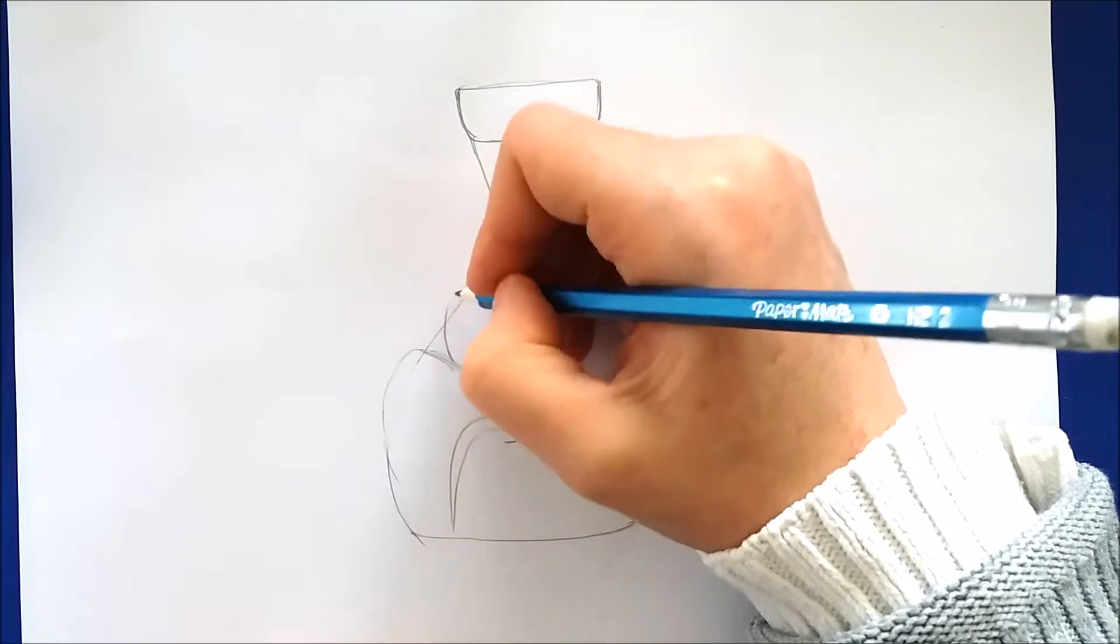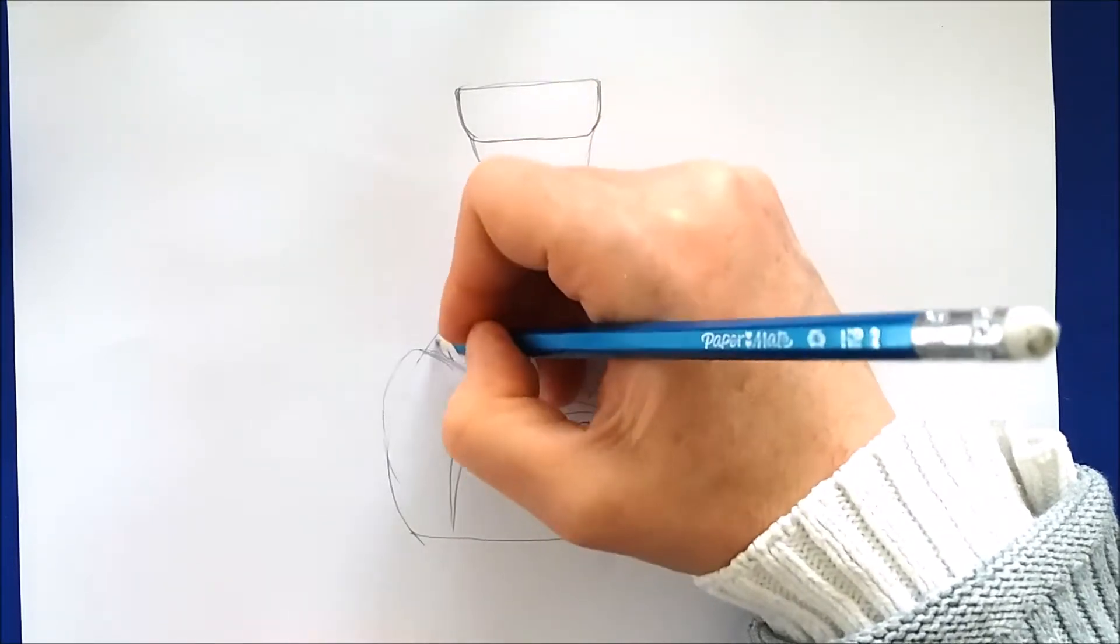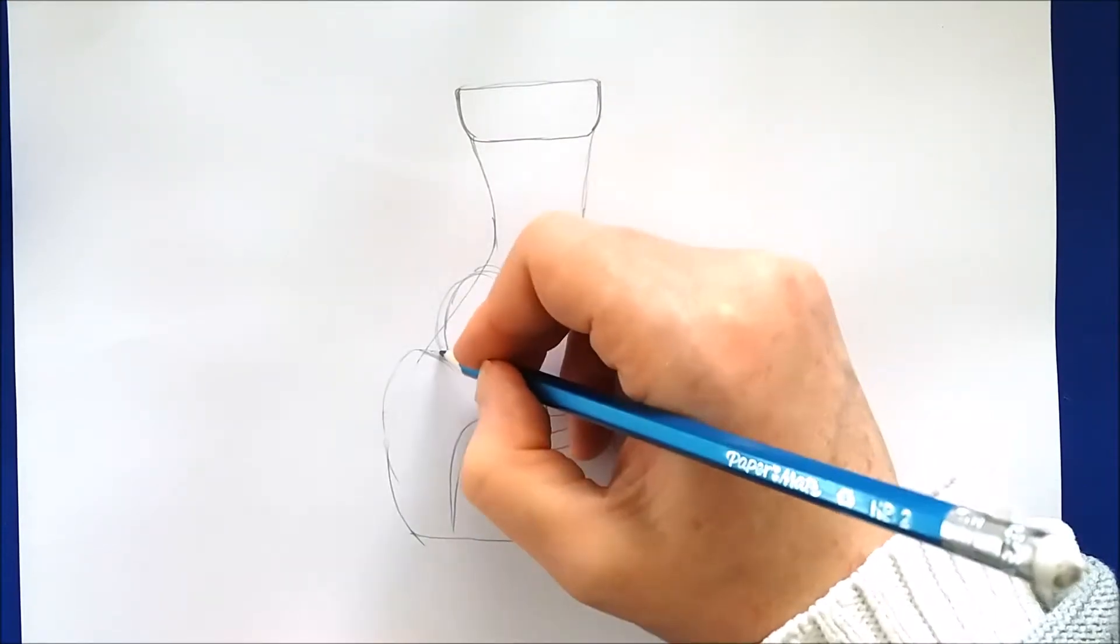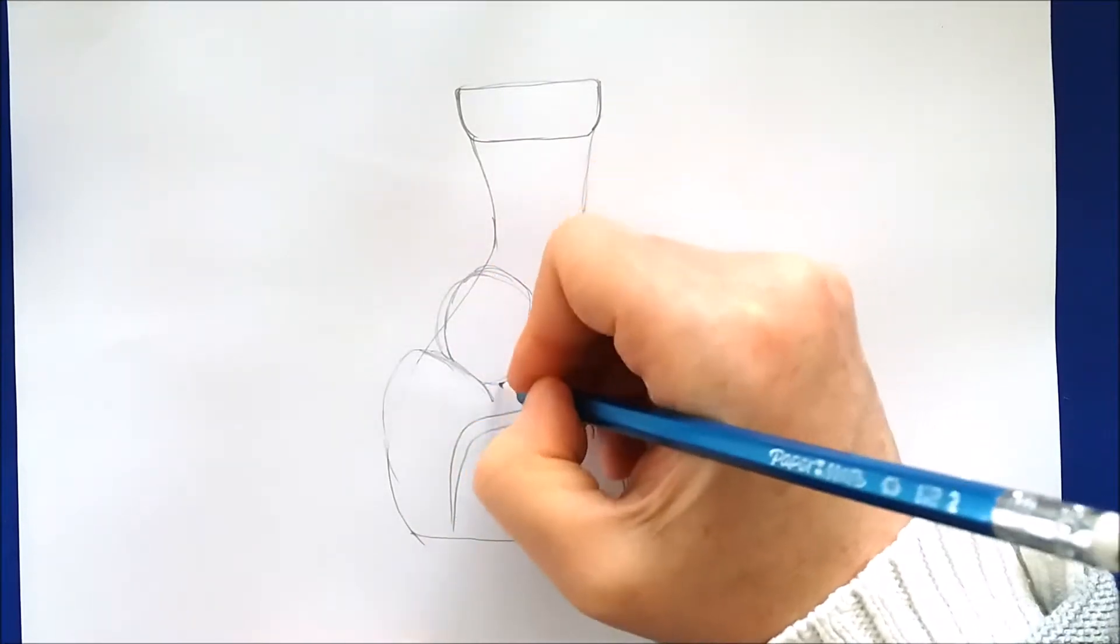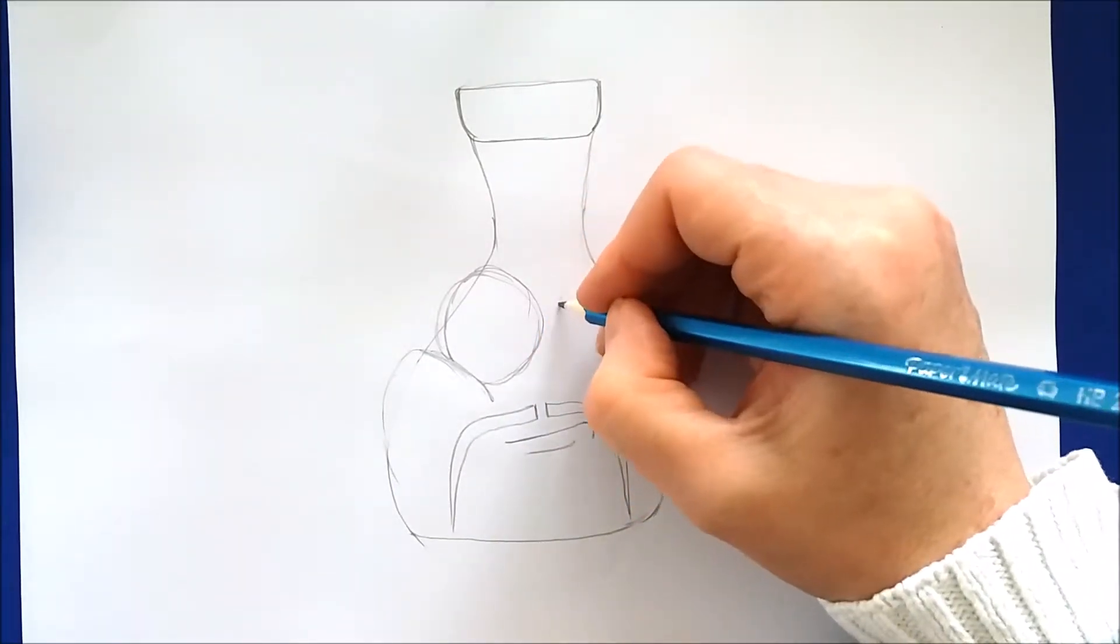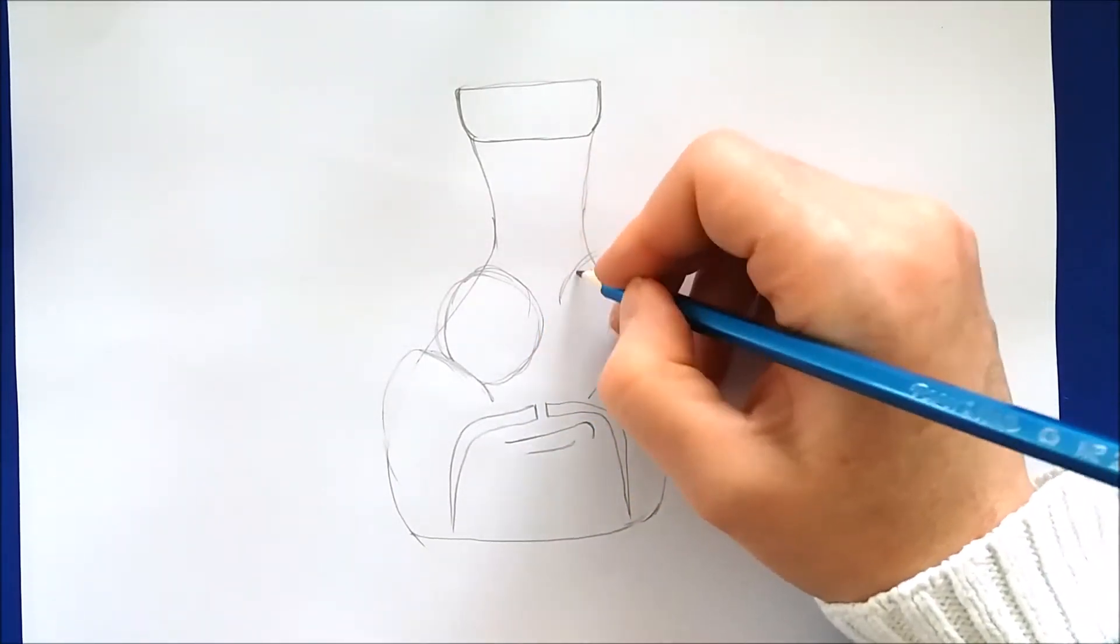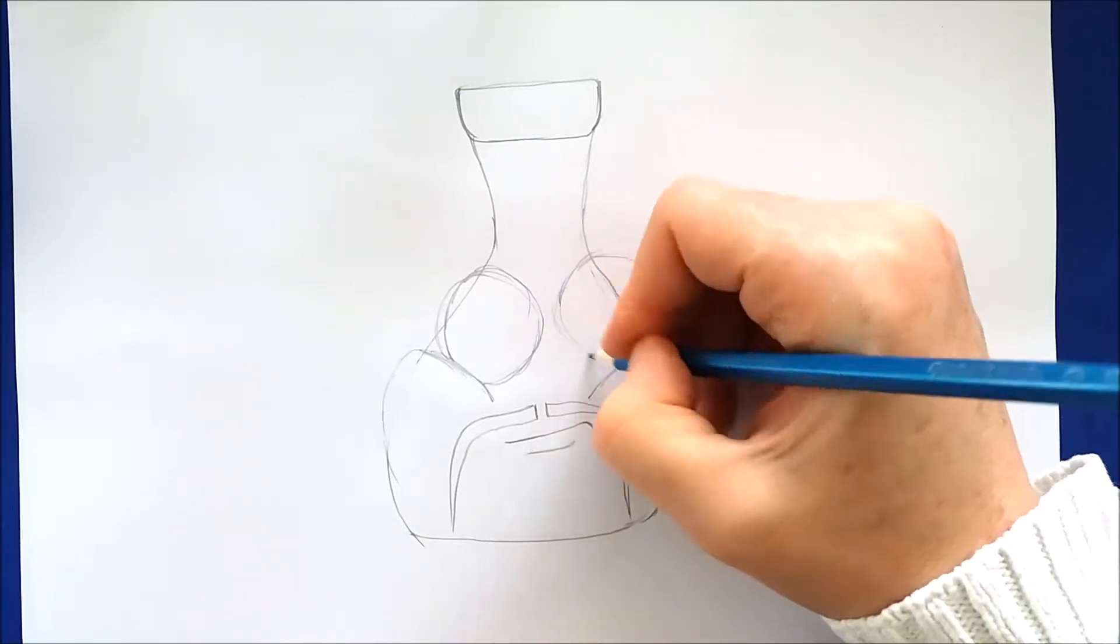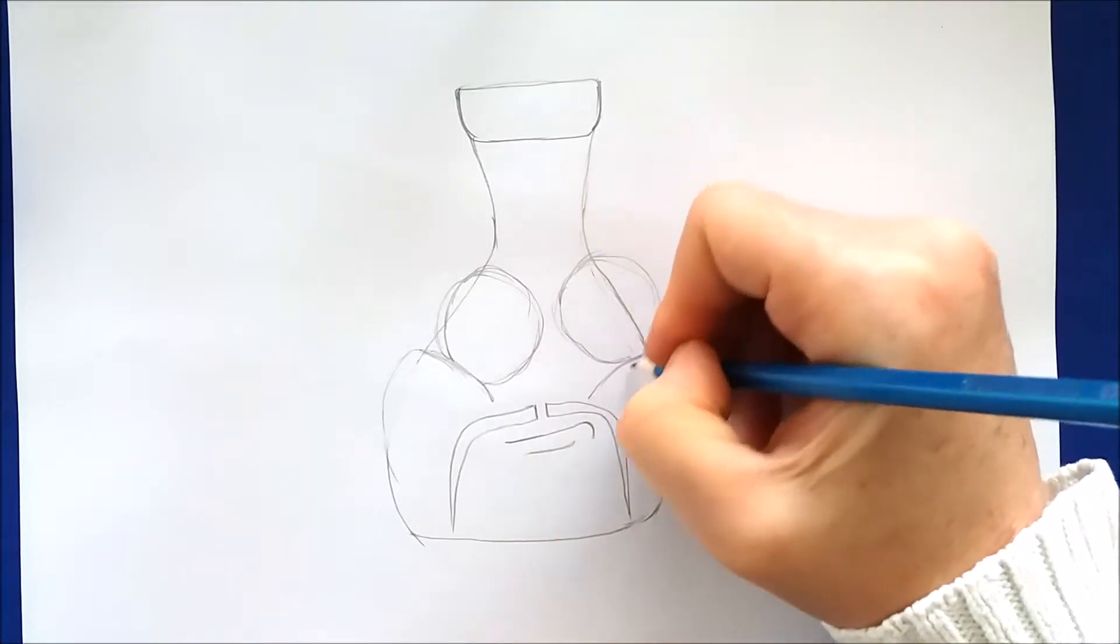Now we'll draw in his eyes, which are two great big circles. Those circles rest on top of each cheek. So here's the first circle. And then over here I'll draw the second circle, which is just another great big round circle that extends out over the bottle and rests on the cheek.